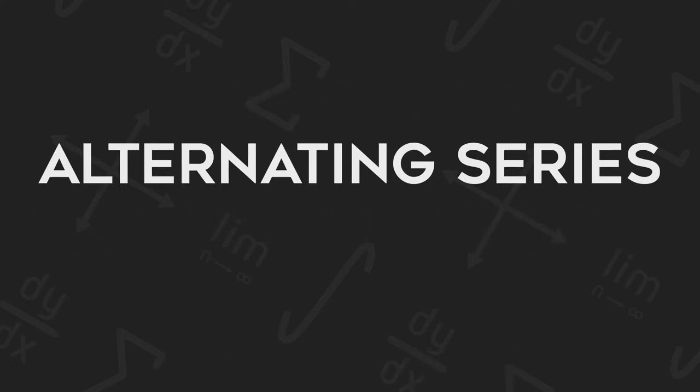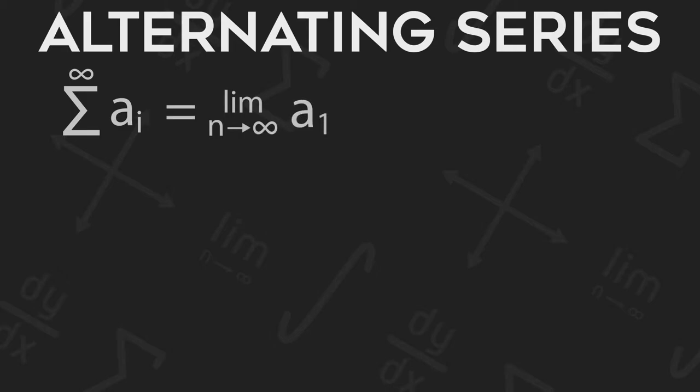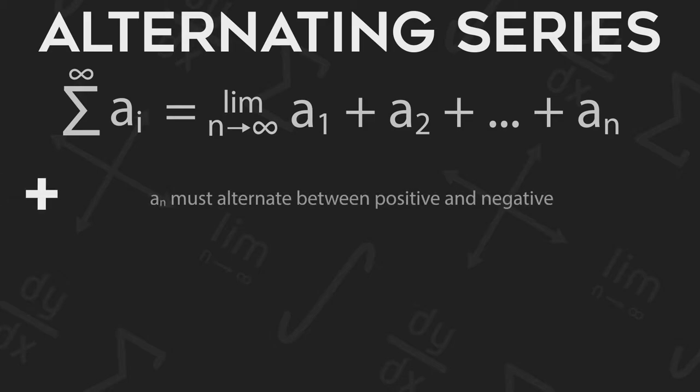Before we can talk about the Estimation Theorem, we must clearly define what an alternating series is. Like any other infinite series, it can be generalized to the sum of a sub 1, a sub 2, all the way to a sub n, where n is approaching infinity. For a series to be alternating, a sub n must alternate back and forth between positive and negative.